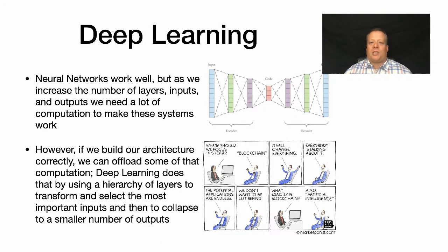Then we get to the next advance, which is really deep learning. The problem with neural nets is they were great and they work very well, but as we continue to increase the numbers of layers and inputs, they became unmanageable and we need lots of computation, lots of examples to actually get them to work. However, it turns out if we build our architecture correctly in terms of the way we have the multiple layers putting together, we can offload some of that computation.